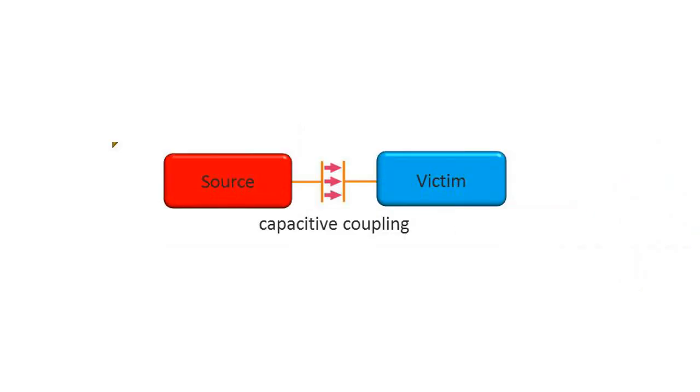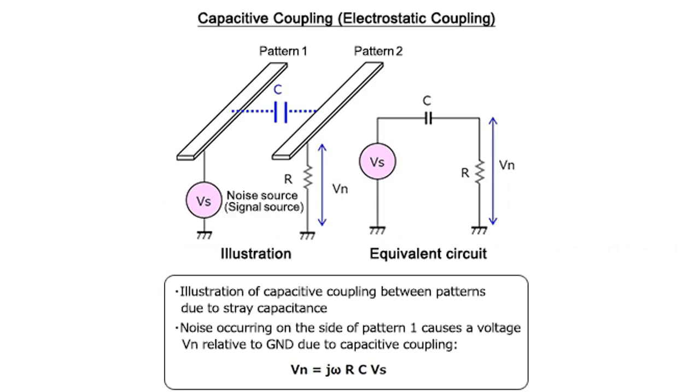Second is capacitive coupling, which can happen when two cables of the system are routed close to each other, thus forming a parasitic capacitor. Capacitive coupling is typical for industrial applications where power and signal lines are laid parallel over long distances.